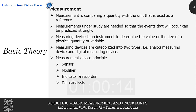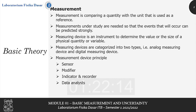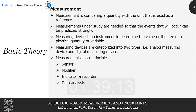The basic theory of this module starts with measurement. Measurement is comparing a quantity with the unit that is used as a reference, and is needed to be studied so that events that will occur can be predicted strongly. A measuring device is an instrument to determine the value or size of a physical quantity or variable. There are two types of measuring device: analog and digital. The working principle of geometric measuring instruments can be explained through its main components, namely sensor, modifier, indicator and recorder, as well as data analysis.